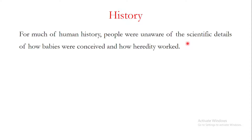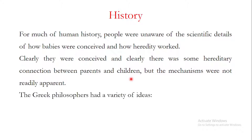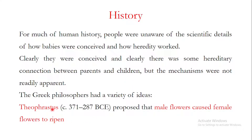If you look at the glorious history of genetics, it started very early, because from much of human history people were unaware of the scientific details of how babies were conceived and how heredity worked. The history usually starts with the Greek philosophers, who had a variety of ideas about heredity and the transmission of characters. For example, Theophrastus proposed that male flowers actually cause female flowers to ripen — this was his understanding of genetics.